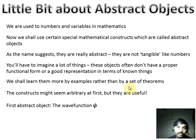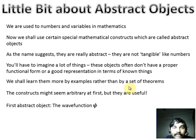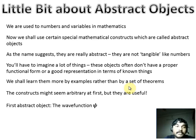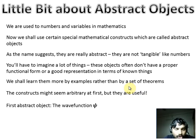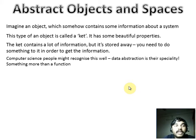The first abstract object you might find is the wave function psi itself. The wave function psi, as we discussed in the last lecture, is really an abstract object — it's a probability wave and you can't measure it. Let's get a little bit more into these things.